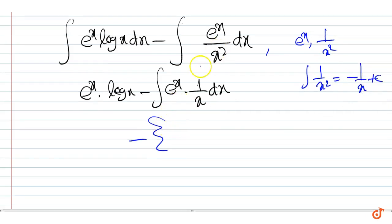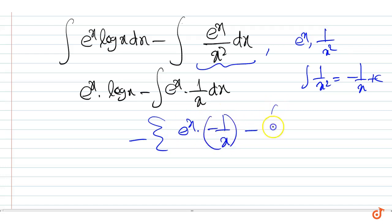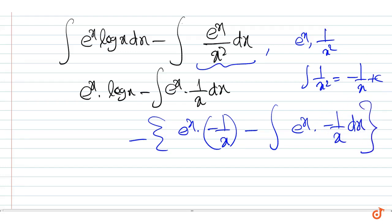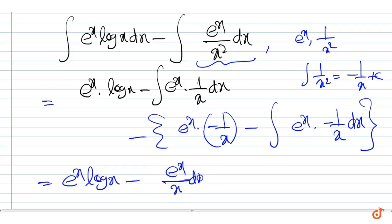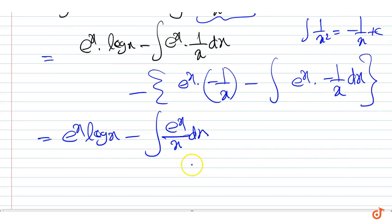Therefore, this integral can be written as e to the power x into minus 1 by x, minus integral of e to the power x into minus 1 by x dx, equal to e to the power x log x minus e to the power x by x dx integral, plus e to the power x by x.